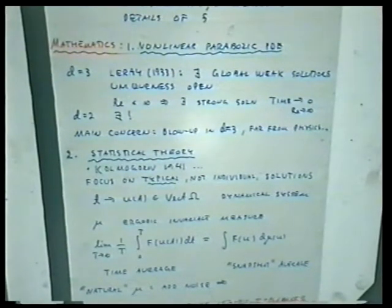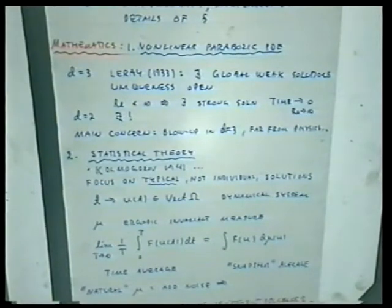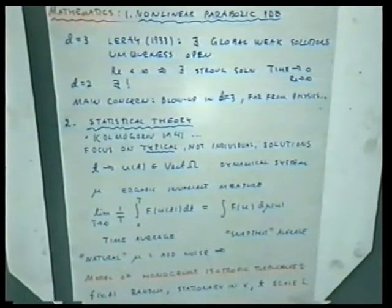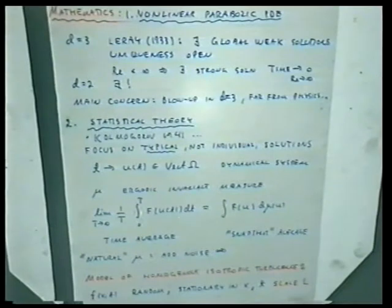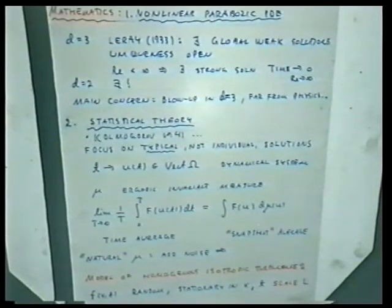In the statistical theory, you want to focus on typical rather than individual solutions. From dynamical systems, you know what you want: an ergodic invariant measure of the dynamical system. If you had such a thing, then the time averages of suitable observables would equal the averages over the invariant measure — so time average equals average over snapshots of the fluid at given times in the invariant measure.